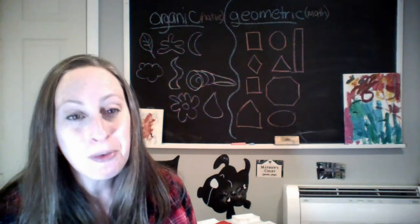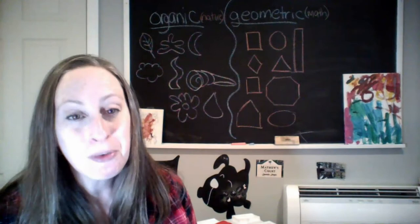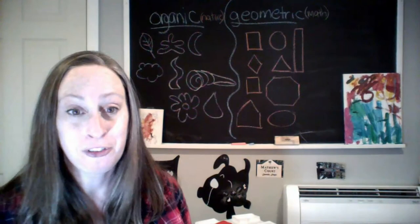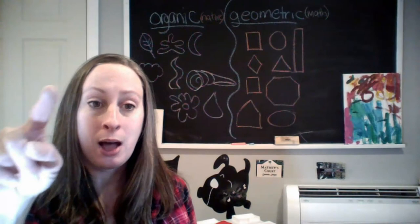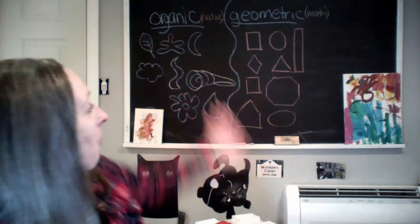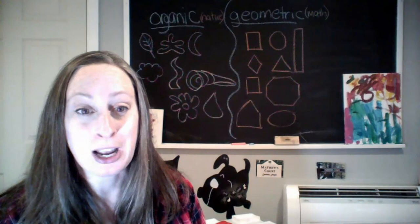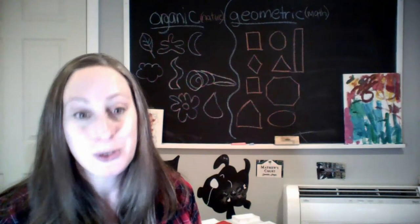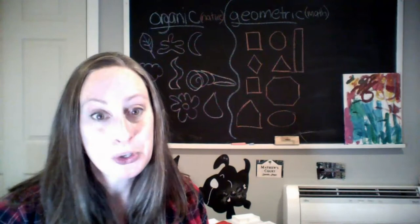Before we move on, I just want to mention two new groups of shapes. Shapes are two-dimensional or flat. In order to make a shape, we need to take a line and make it go around somehow and close on itself. I just want to talk about organic shapes and geometric shapes. We talked about these a little bit in first grade. Organic shapes are shapes that we find in nature — in the sky, under the water, or in the woods.